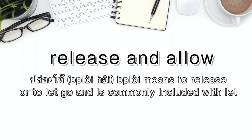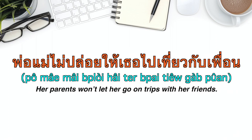Another form is ปล่อยให้ (bploi hai), meaning 'release and allow.' ปล่อย means to release or let go, and it is commonly combined with ให้. For example: พ่อแม่ไม่ปล่อยให้เธอไปเที่ยวกับเพื่อน — 'Her parents won't let her go on trips with her friends.'